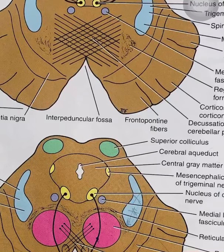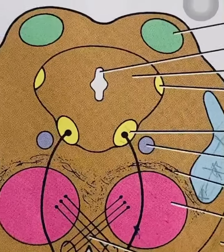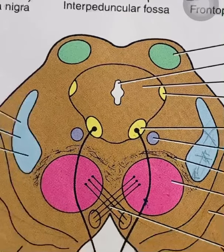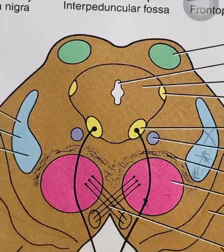The superior colliculus is for the third nerve and the inferior colliculus is for the fourth nerve. The second important component is the red nucleus — the most important extrapyramidal structure. It is red in color because it has a rich vascular supply and contains iron-containing pigments. An important MCQ: name the nerve passing through the red nucleus — that is the oculomotor nerve.